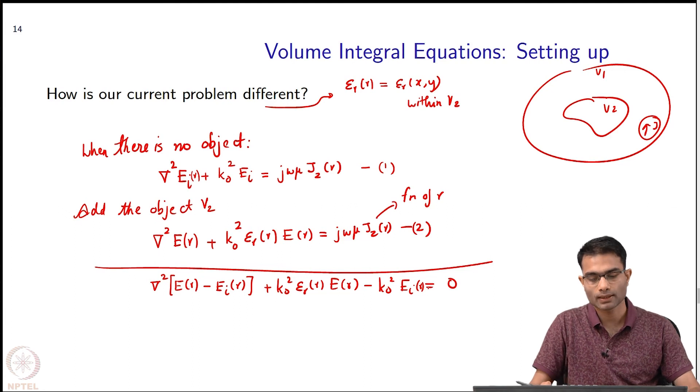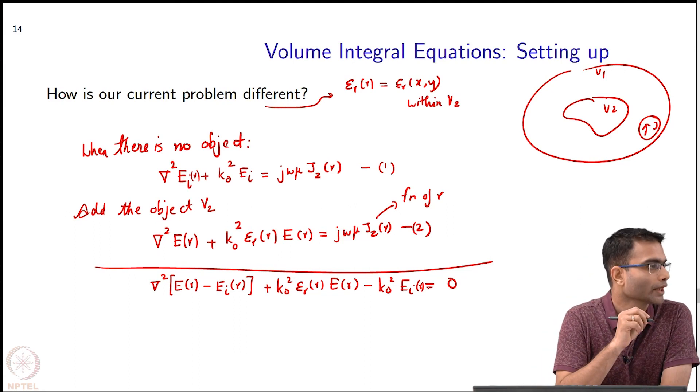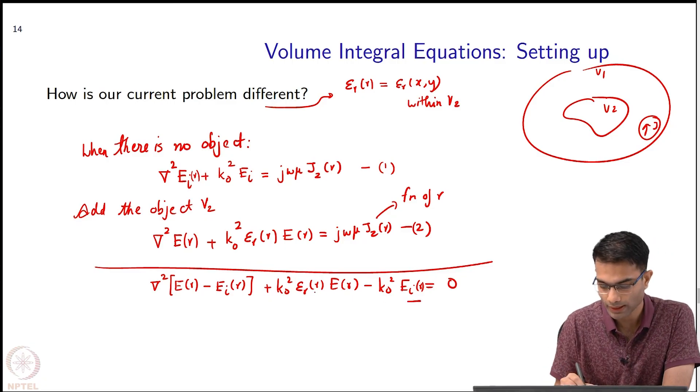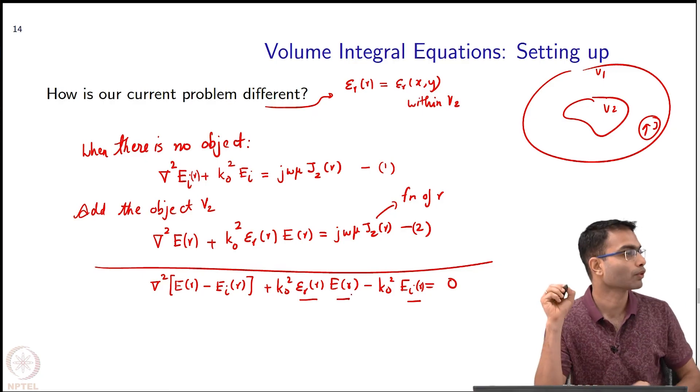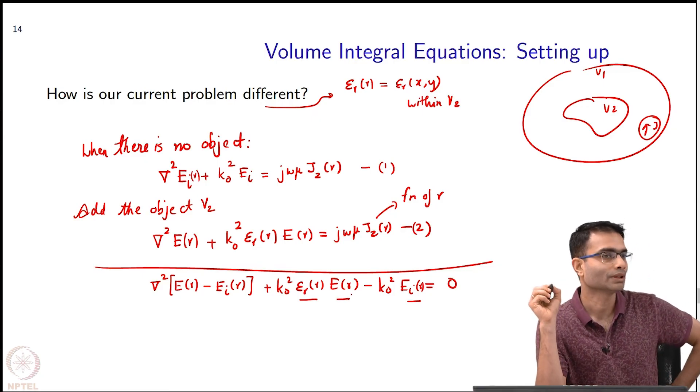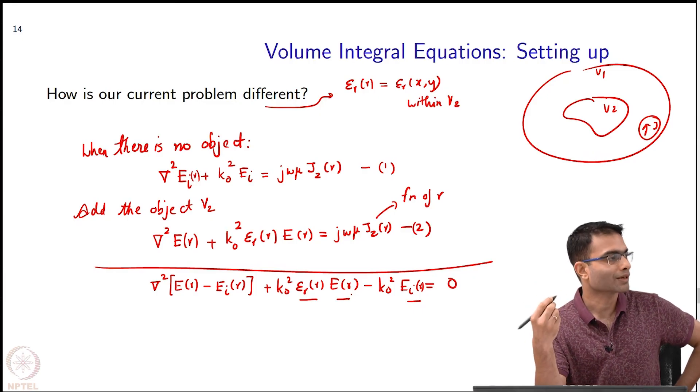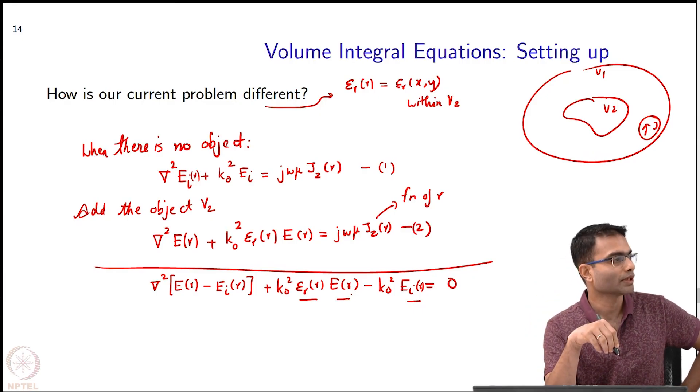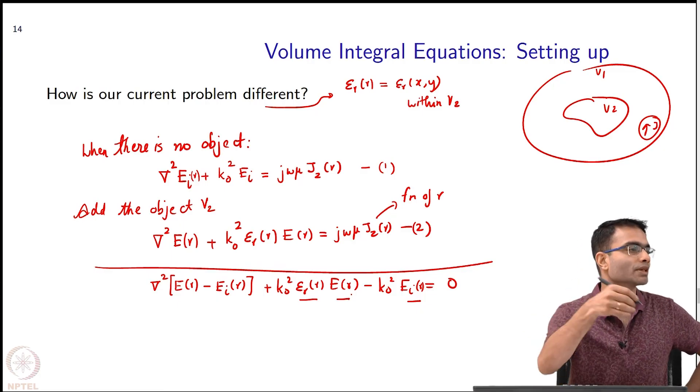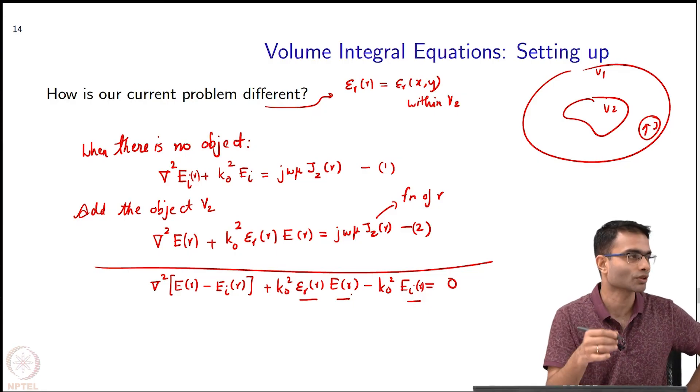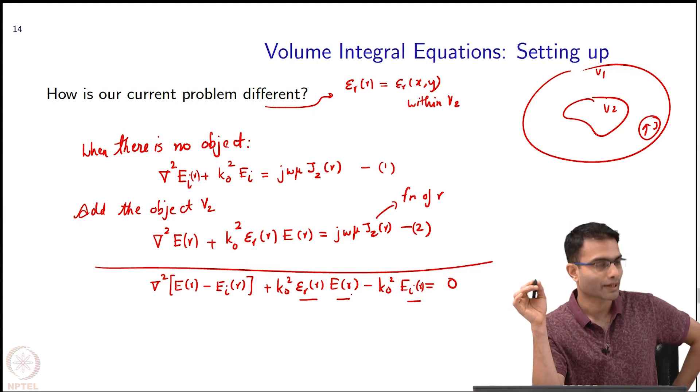This is an equation which has pretty much everything we want. It has the incident field, it has the object information and it has the variable that I want to find out that I want to solve for, it has everything and I have eliminated this current source. Actually the influence of the current source has been absorbed into the problem in which term? The influence of the current source has made its appearance in the incident field. It is not that I have completely removed the current source. This is the equation that we have.